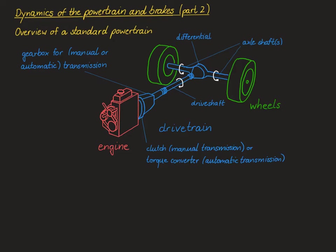In the last video we started our chapter on the longitudinal dynamics of a vehicle by looking at the engine and the brakes. In this video we will turn to the rest of the powertrain, in particular the dynamics of the wheels and the drivetrain. Let's begin with the clutch and the torque converter and then work our way along the driveshaft down to the wheels.